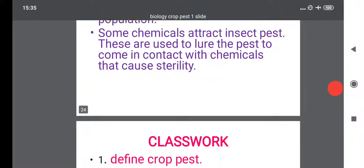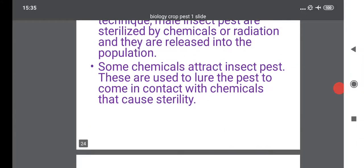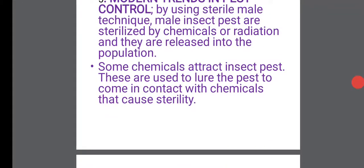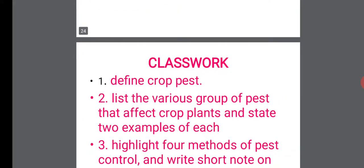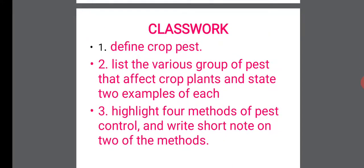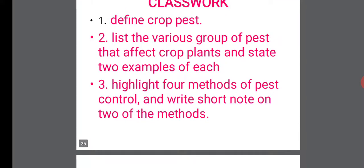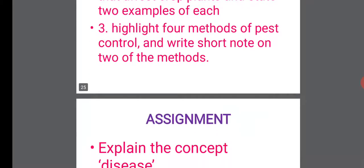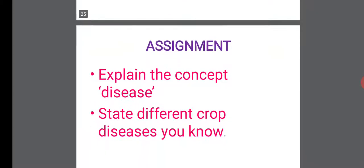We've talked about crop pests, the various groups of crop pests with examples, and also methods of control of crop pests. Classwork: define crop pests. Number two, list the various groups of pests that affect crop plants and state two examples of each. Number three, highlight four methods of crop pest control and write short notes on two of the methods you highlighted.